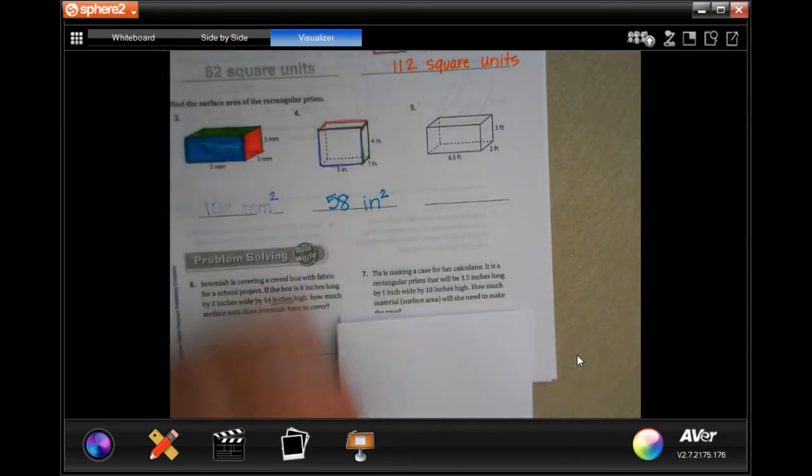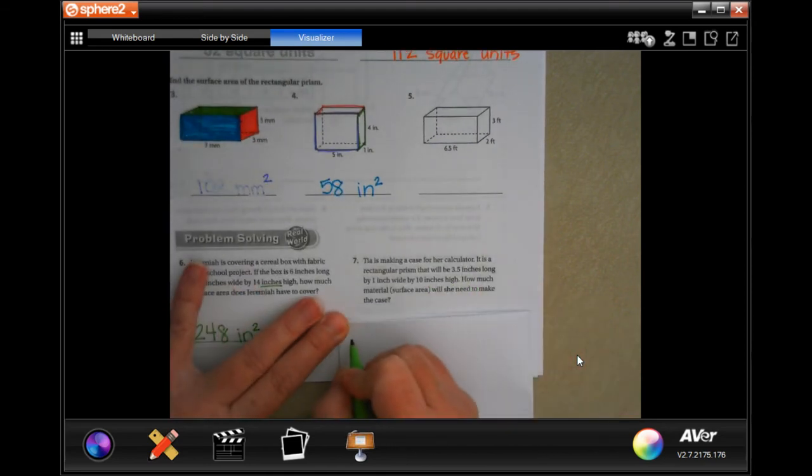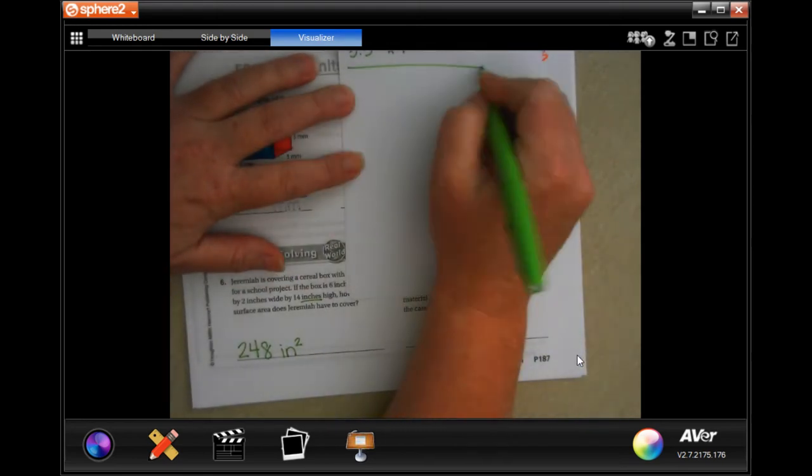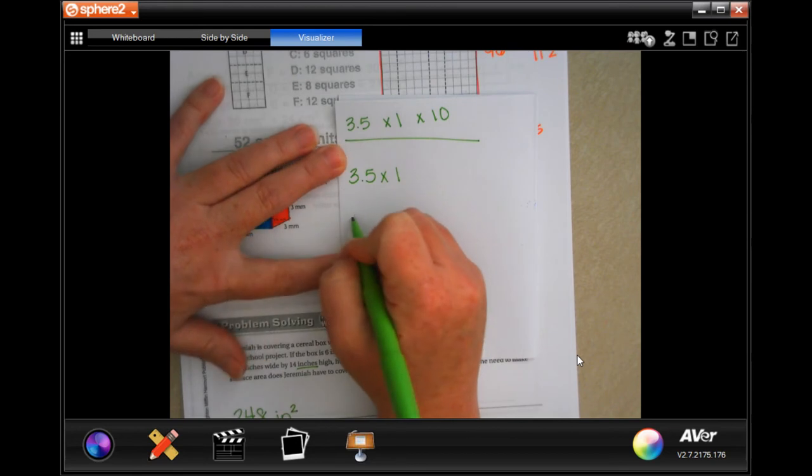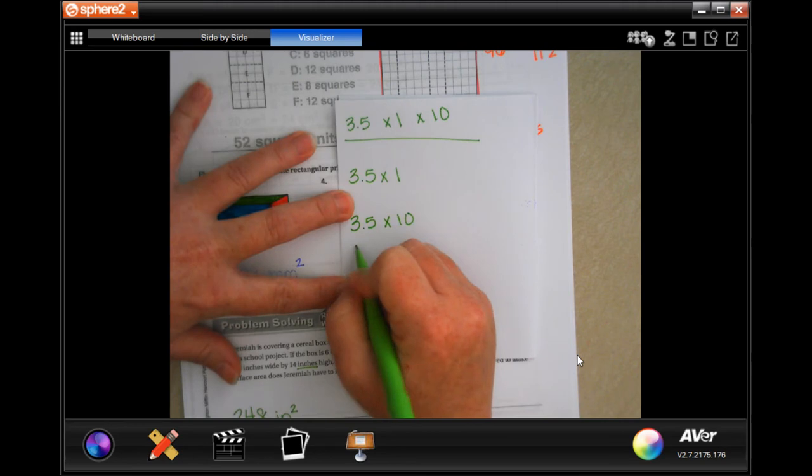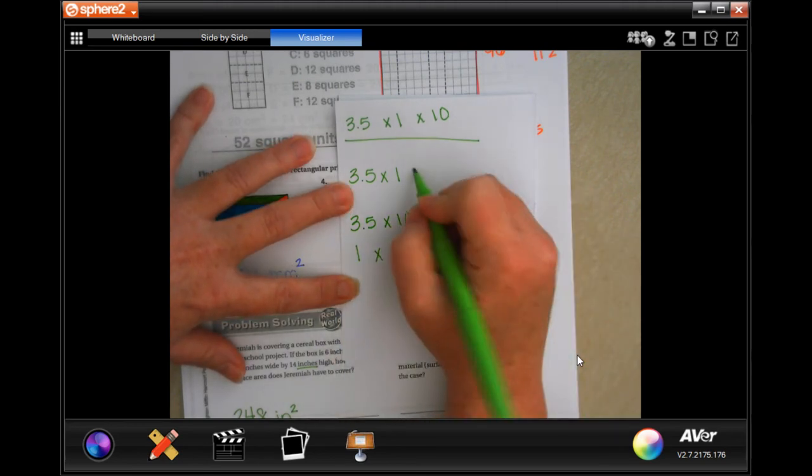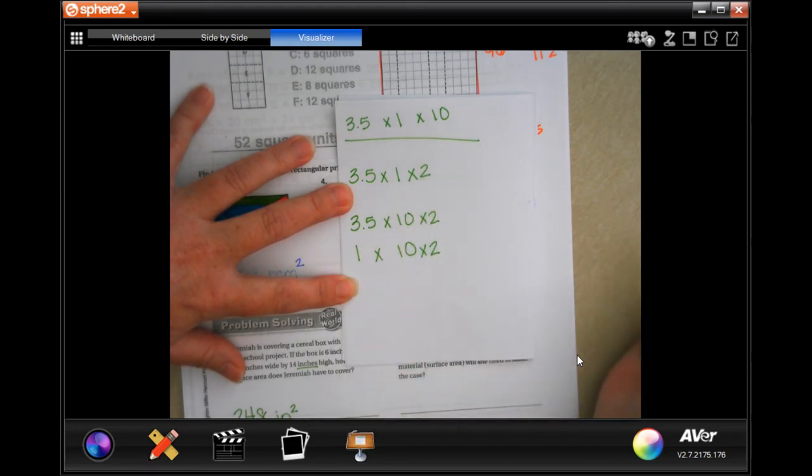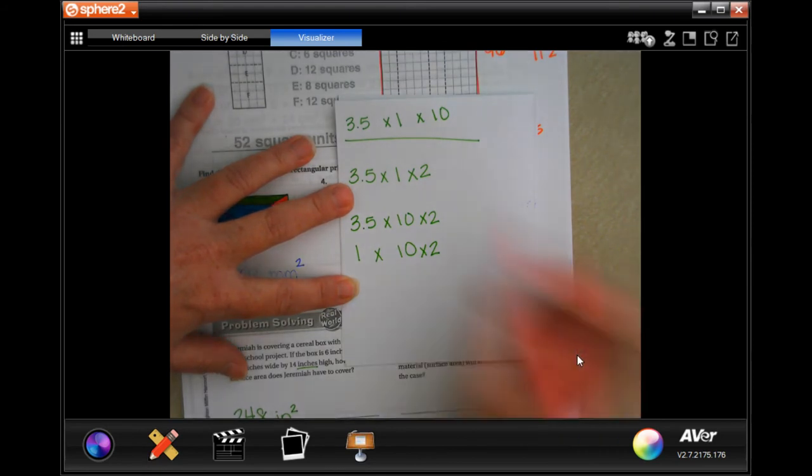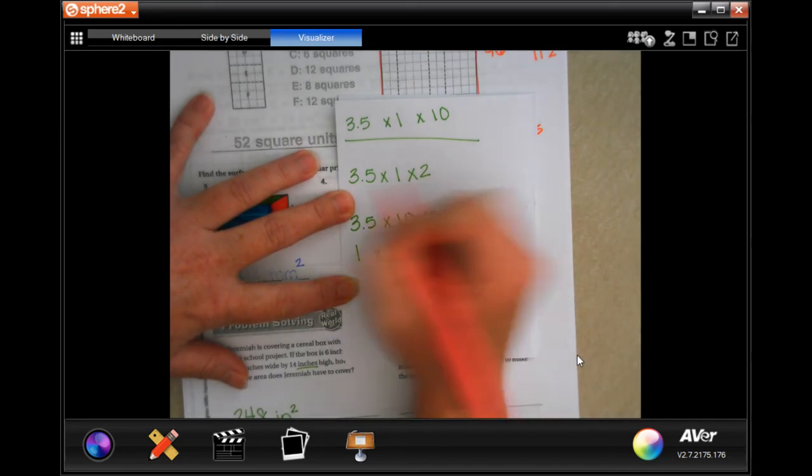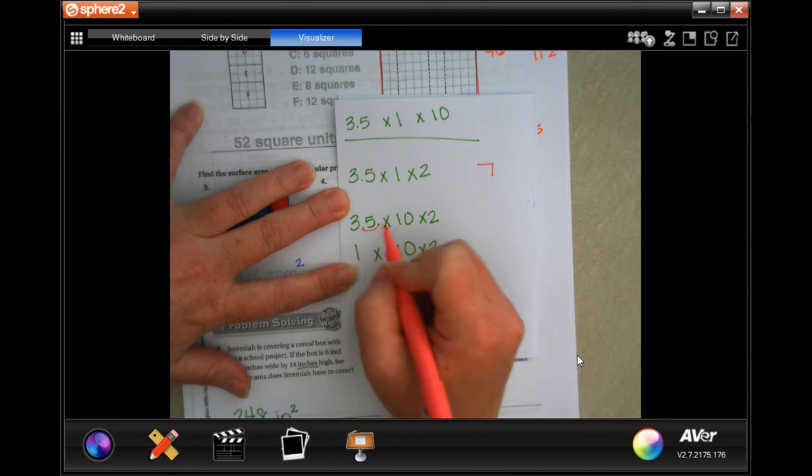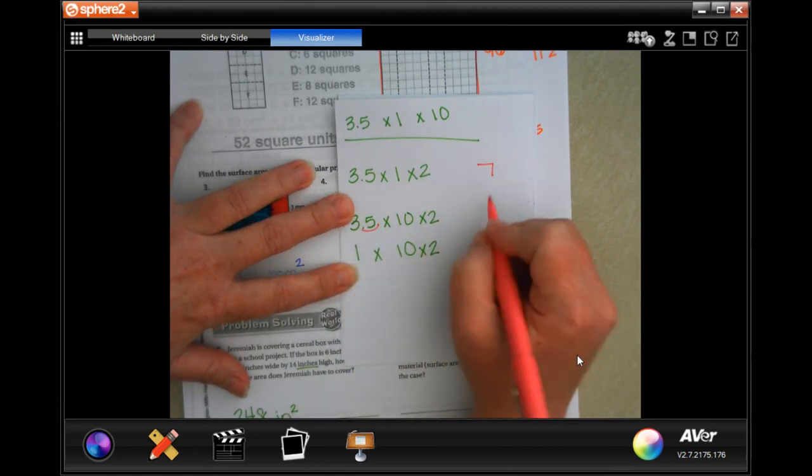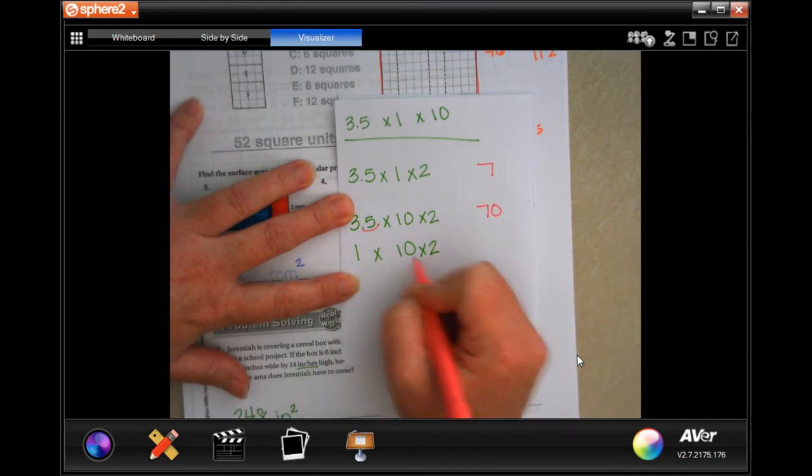C is making a case for her calculator. So, we have the 3.5. We have a one. And we have a 10. So, those are our original dimensions. I'm going to do exactly what I did last time. 3.5 times 1. 3.5 times 10. And 1 times 10. Now, each one of those, there's two of those sides. So, I need to multiply each one by 2. So, 3.5 times 1 is going to be 3.5 times 2. Well, 3.5 times 2 is 7. 3.5 times 10 means I get to move the decimal one time. So, that's 35. And 35 times 2 is 70. Now, 1 times 10 is 10. Times 2 is 20.